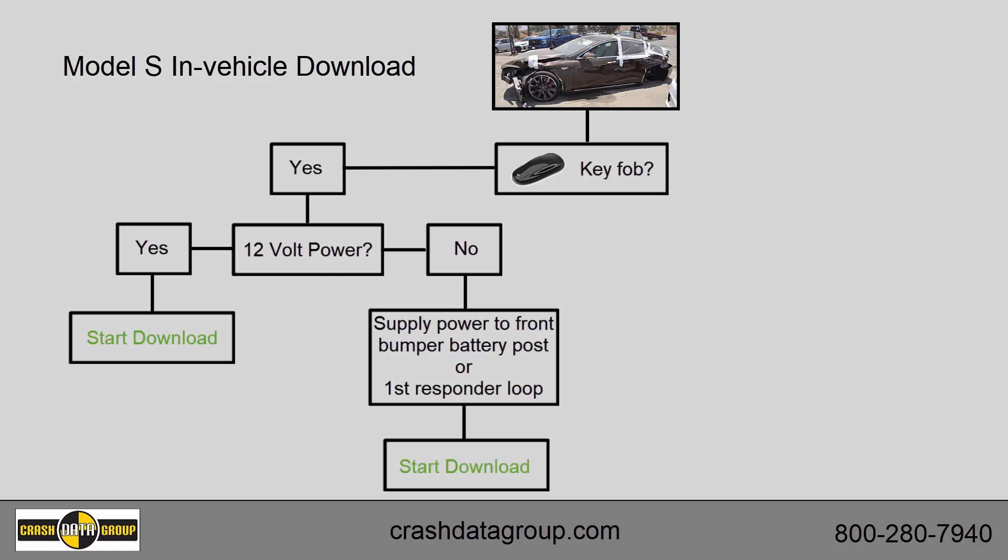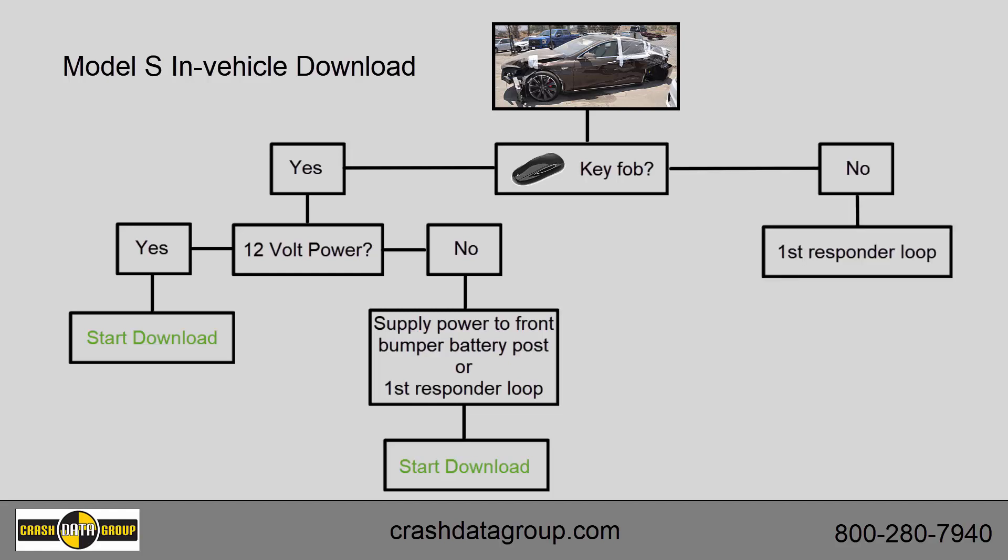Once 12-volt power is supplied, you can proceed with the in-vehicle download. If you don't have the key fob, you'll need to supply supplemental 12-volt power directly to the RCM through the first responder loop. Once completed, you can proceed with the in-vehicle download.